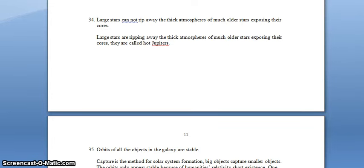Alright, for the third and final of the assumptions list. Large stars cannot rip away the thick atmospheres of much older stars exposing their cores. Large stars are ripping away the thick atmospheres of much older stars exposing their cores. They are called hot Jupiters.